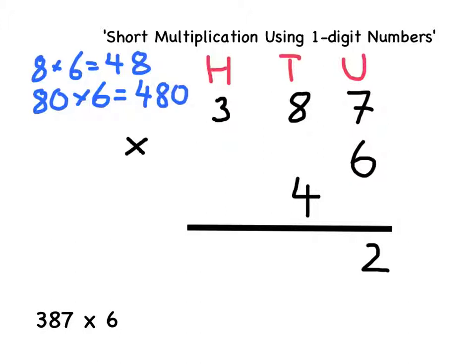However, 480 is not the final answer for the tens column part of the short multiplication. I've still got to use the 40 that was part of the units multiplication.